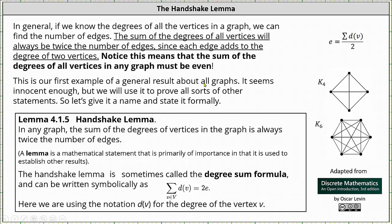This is our first example of a general result about all graphs. It seems innocent enough, but we will use it to prove all sorts of other statements. So let's give it a name and state it formally. It is called the handshake lemma. In any graph, the sum of the degrees of the vertices in the graph is always twice the number of edges. A lemma in mathematics is a statement that is primarily of importance in that it is used to establish other results. The handshake lemma is sometimes called the degree sum formula and can be written symbolically as the sum of the degrees of all the vertices is equal to two times E. Notice here we're using d of V for the degree of the vertex V and E is equal to the number of edges.